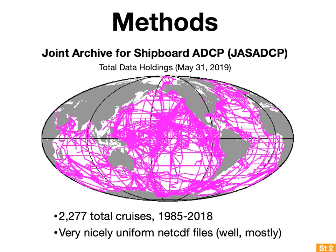I also want to publish an open-source software package for using this ADCP data to compute the backscatter due to these organisms and detect their diel vertical migrations. The dataset I used was called the Joint Archive for Shipboard ADCP, or JAS ADCP. You can see all of the cruises in that dataset on a map — about 2,000 cruises from 1985 to 2018. In general, one acoustic profile is taken every five minutes over the duration of a cruise, resulting in a lot of data — though in total only about 15 gigabytes.